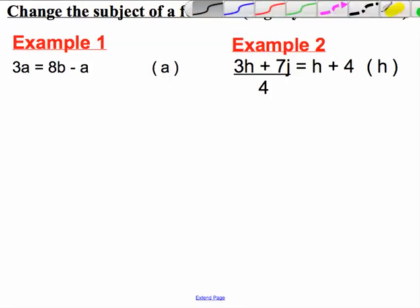The complication here, of course, is that there is 3 lots of a here and a negative a here. And we want a on its own on one side of the equals sign. So, what could we do to this equation?